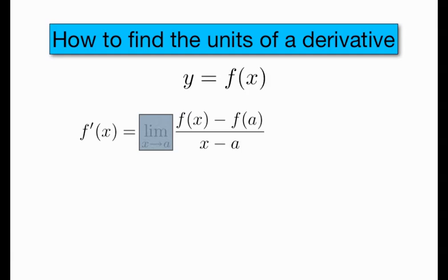And all of a sudden, this looks a lot like the average velocity situation from a minute ago. What are the units of f prime of x? Well, they're the units of whatever this fraction is. And I can tell that by looking at the units of the numerator, which are in whatever units y was measured in, because that's a difference in y values.